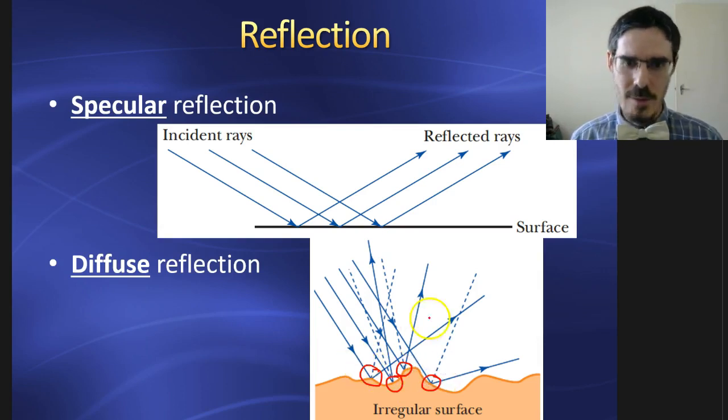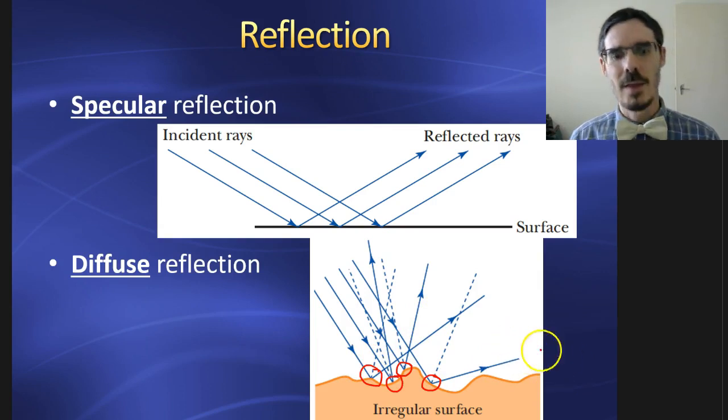Which means each of those reflected rays comes off at a different direction. And that results in what's called diffuse reflection, where you can't see an image.